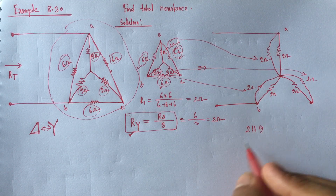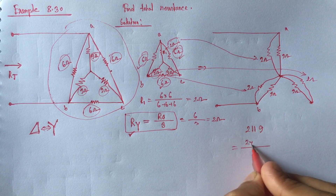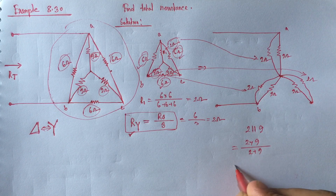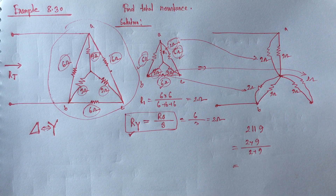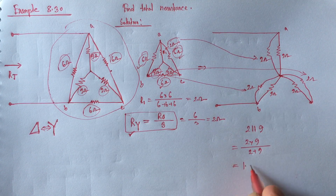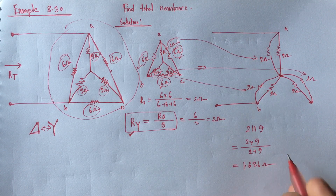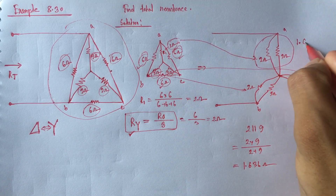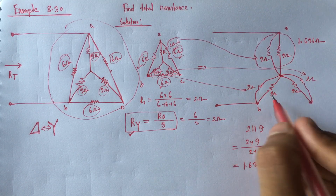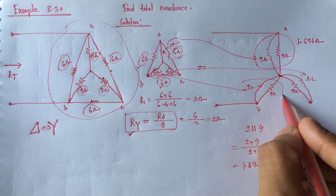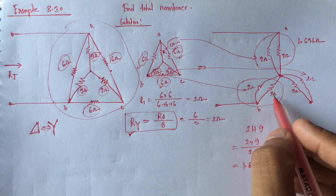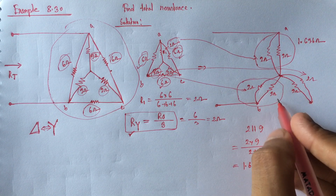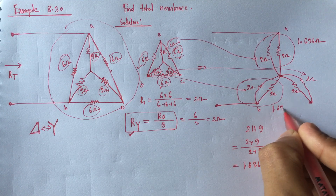The equivalent of the 2-ohm and 9-ohm parallel combination can be replaced by a resistance of 1.636 ohm. So this part is equivalent to 1.636 ohm. Similarly, since the other branch is also a parallel combination of 9 ohm and 2 ohm, it can also be replaced by 1.636 ohm.